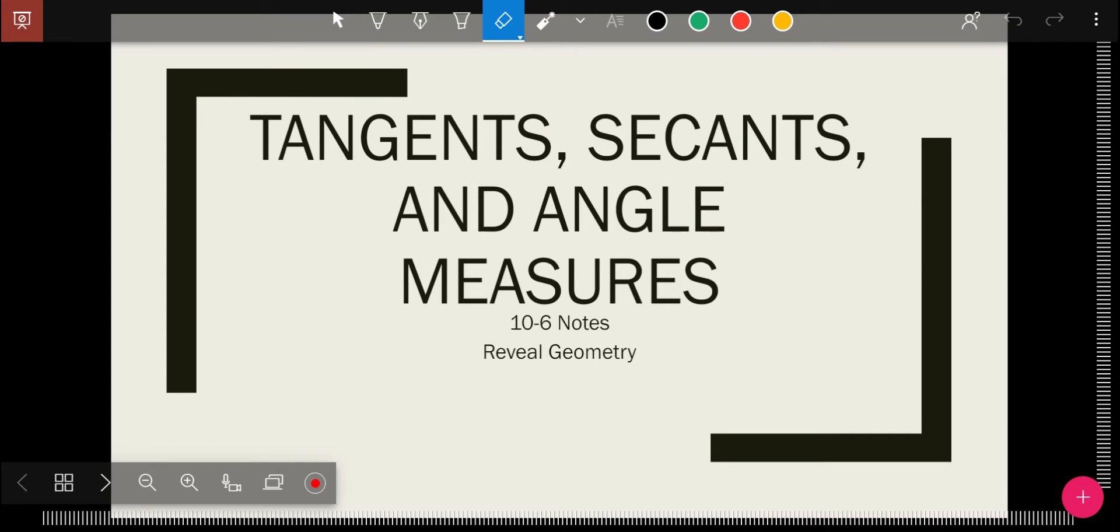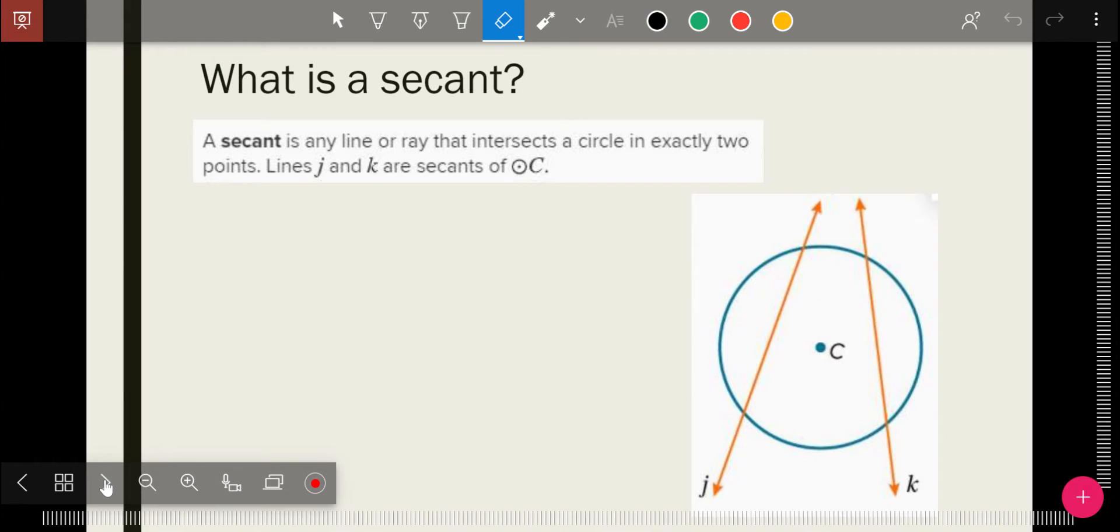Today we're doing 10-6 in our Revealed Geometry books: Tangents, Secants, and Angle Measures.